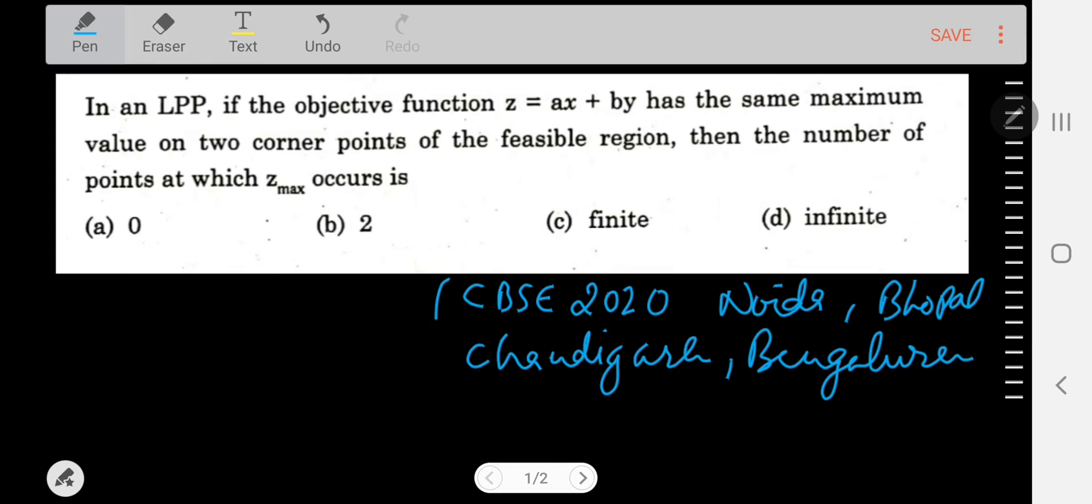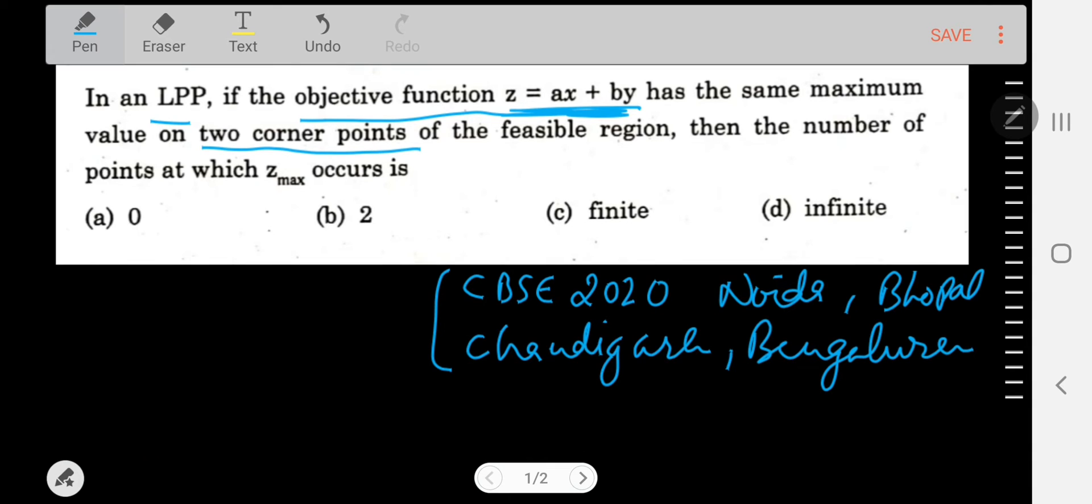Okay, so it states that in an LPP, if the objective function z equals ax plus by has the same maximum value on two corner points of the feasible region, then the number of points at which z_max occurs is... So we have some options here. Just to make you understand, let me